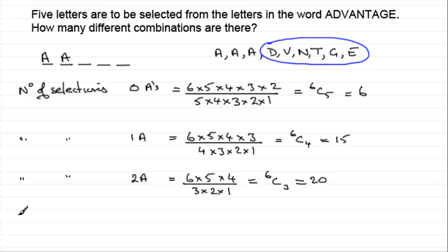Finally, we could have three A's in there. And if we've got three A's in there, we're left with just two spaces to fill. So I'm sure you've guessed what it's going to be. It'll be six by five, all divided by two factorial, two by one, or 6C2. And that will come to a total of 15.